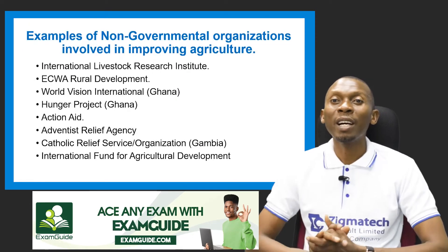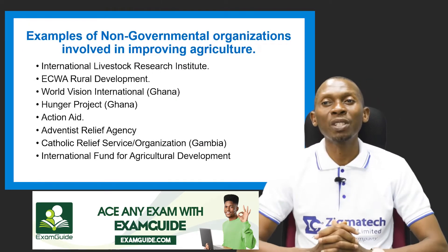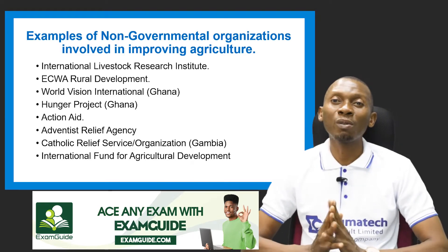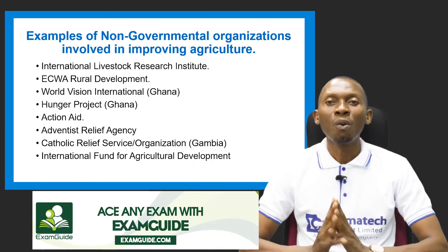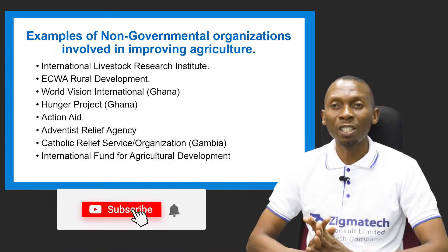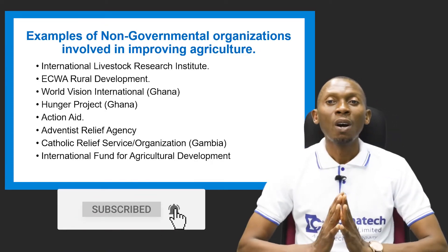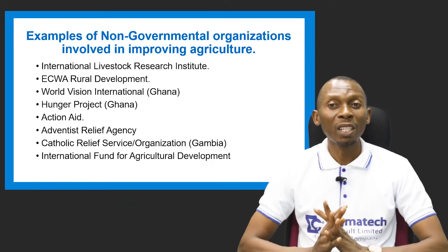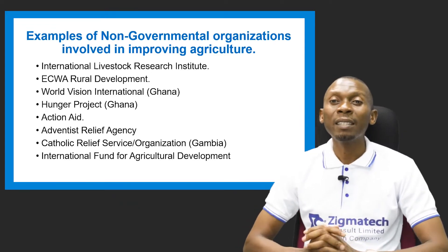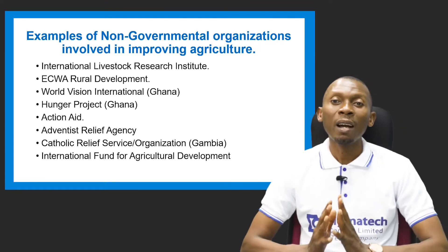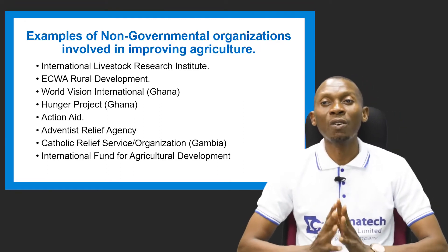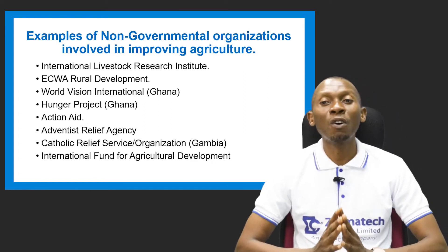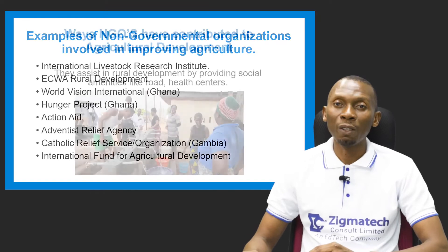We also have International Center for Research in Agroforestry, International Livestock Research Institute, Equorural Development, World Vision International located in Ghana, Hunger Project also located in Ghana, Action Aid, Adventist Relief Agency, Catholic Relief Service Organization in Gambia, and the International Fund for Agricultural Development.